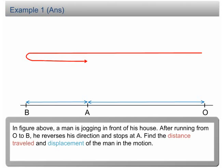When the man traveled from O to A, the distance is 30m, A to B, 15m, and B back to A, 15m.